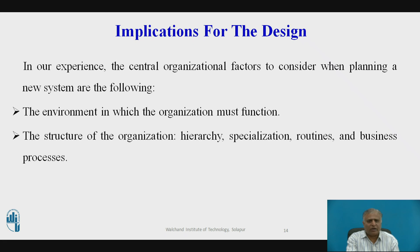For implications for the design of information systems: to deliver genuine benefits, information systems must be built with a clear understanding of the organization in which they will be used. The central organizational factors to consider when planning a new system include: the environment in which the organization must function, the structure of the organization (hierarchy, specialization, routines, and business processes), the organizational culture and politics, the type of organization, style of leadership, and the kind of tasks, decisions, and business processes that the information system is designed to assist.